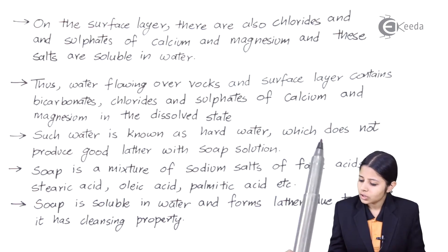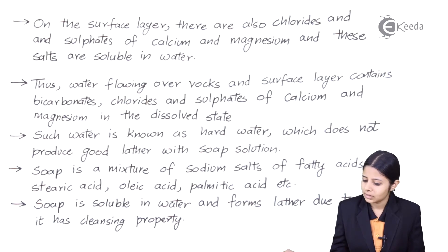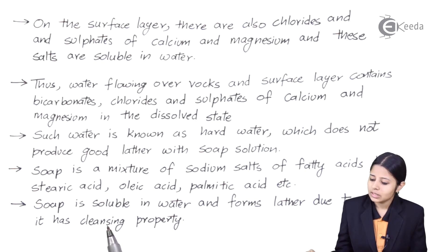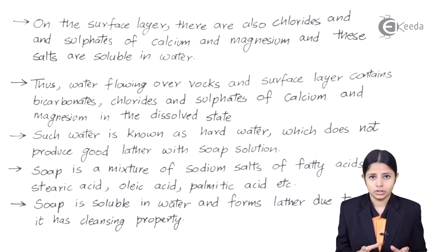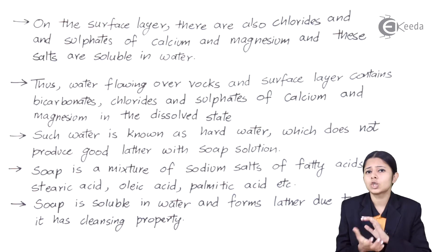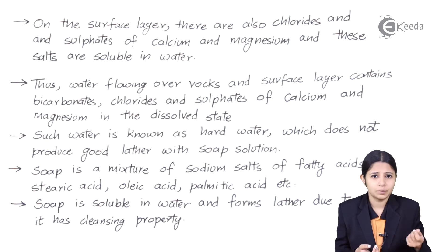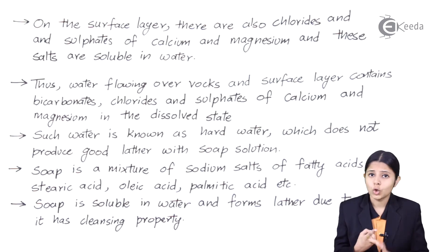Such water is known as hard water, which does not produce good lather with soap solution. Soap is a mixture of sodium salts and fatty acids like stearic acid, oleic acid, and palmitic acid. Soap is soluble in water and forms lather, giving it its cleansing property. The simplest way to determine whether water is soft or hard is by mixing soap in it: good lather means soft water, but mixing soap with hard water will not form lather — instead it forms a scum, a curd-like substance. That is why hard water is not used for industrial or domestic purposes.